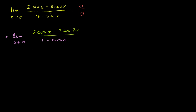Let's try to evaluate this limit. Plugging in x equals 0: the numerator gives 2 cosine of 0, which is 2, minus 2 times cosine of 0, which is also 2. So the numerator is 0. The denominator gives 1 minus cosine of 0, which is 1 minus 1, so that's also 0. Once again we get 0 over 0.